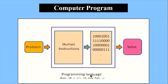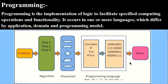So in programming languages, humans write the instructions, those are converted to machine code, and the computer gives us the solution or the result. That is called computer programming. Programming is the implementation of logic to facilitate specific computing operations and functionality.